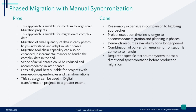However, it is crucial to consider the challenges associated with this approach. Comparatively, it can be reasonably expensive when compared to Big Bang approaches. The project execution timeline is longer to accommodate migration and planning in phases, and it demands resources to be available for a more extended period. Managing the combination of bulk and manual synchronization can be complex and requires careful coordination. Before production migration, a specific test source system is required to test bidirectional synchronization, adding to the cost. In essence, while phased migration with manual synchronization offers flexibility and risk mitigation, it comes with the trade-off of higher cost, an extended timeline, and resource demands. Careful consideration is needed based on project requirements and constraints.